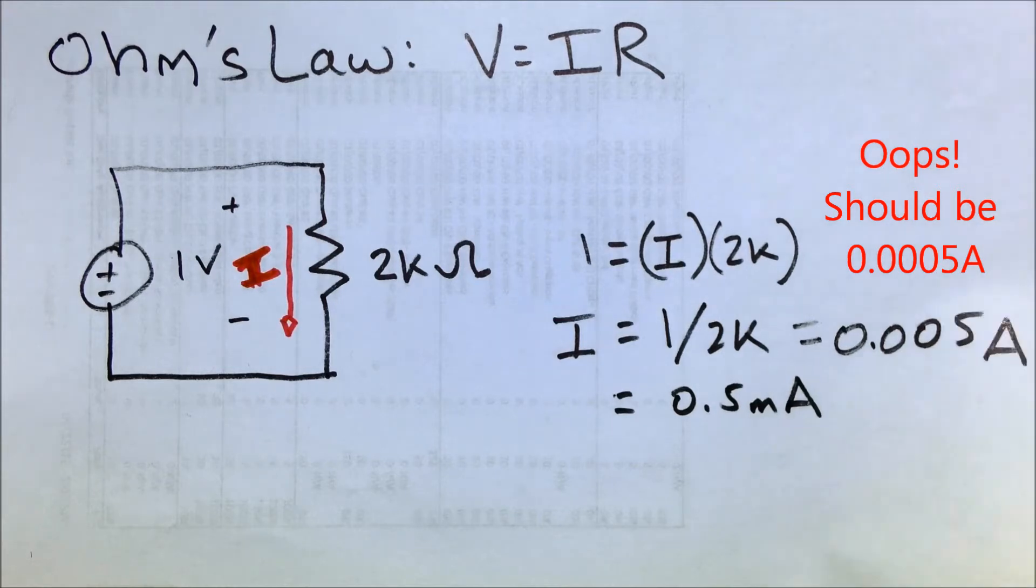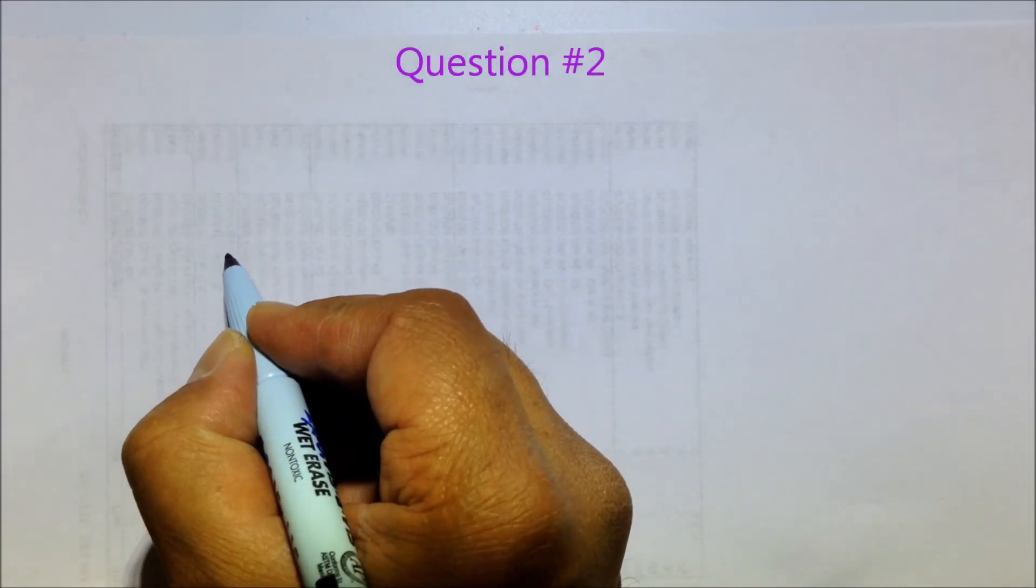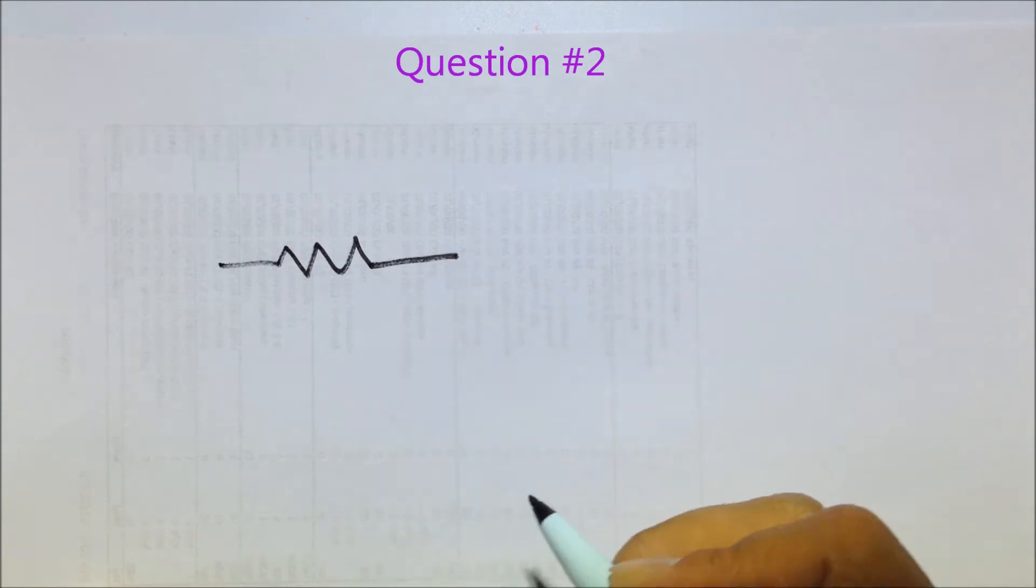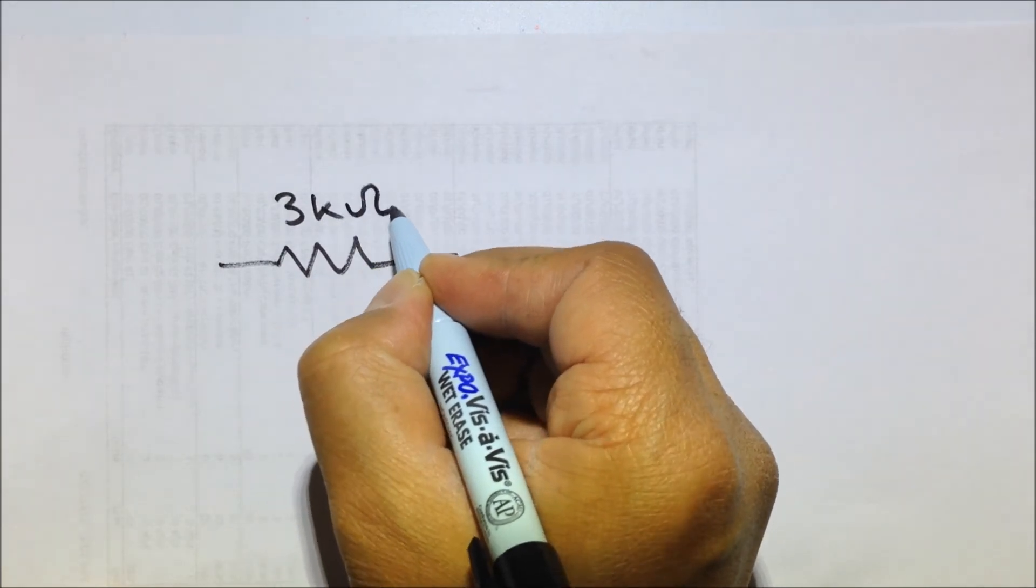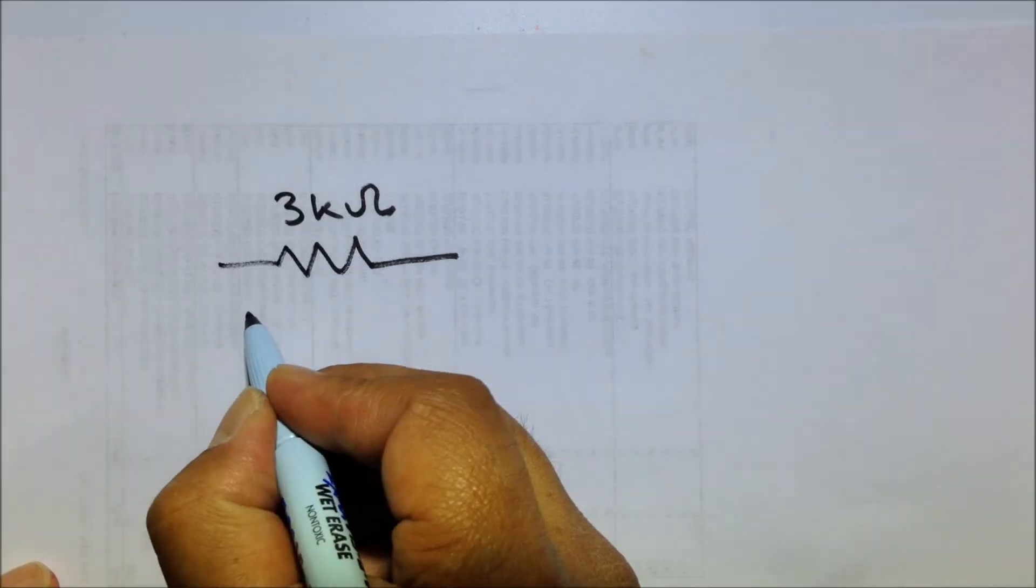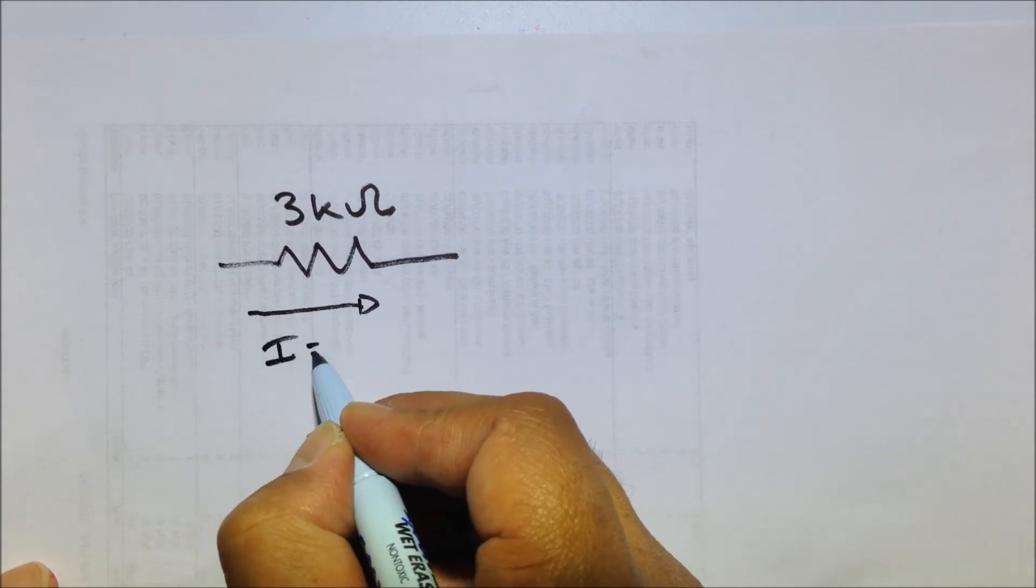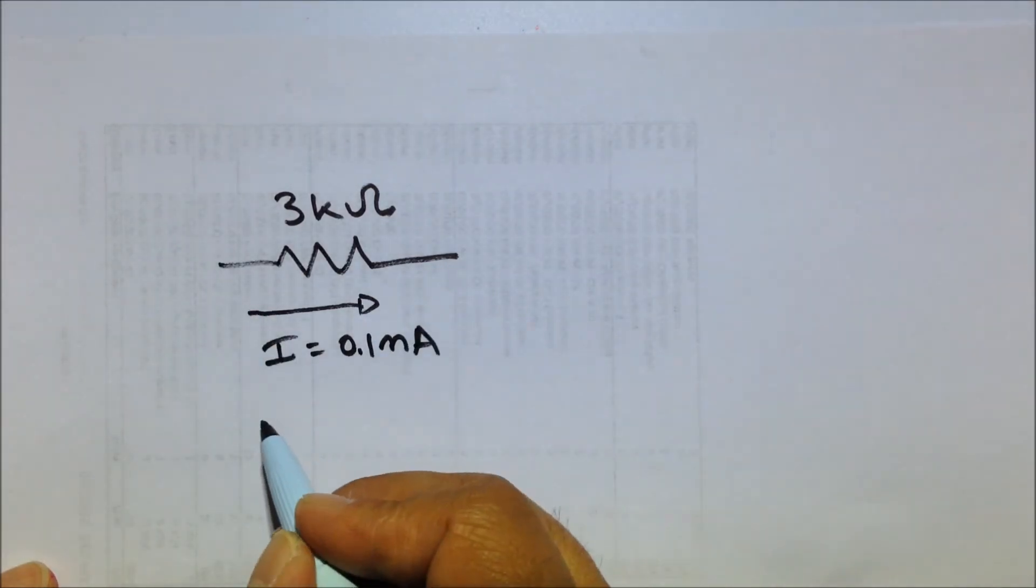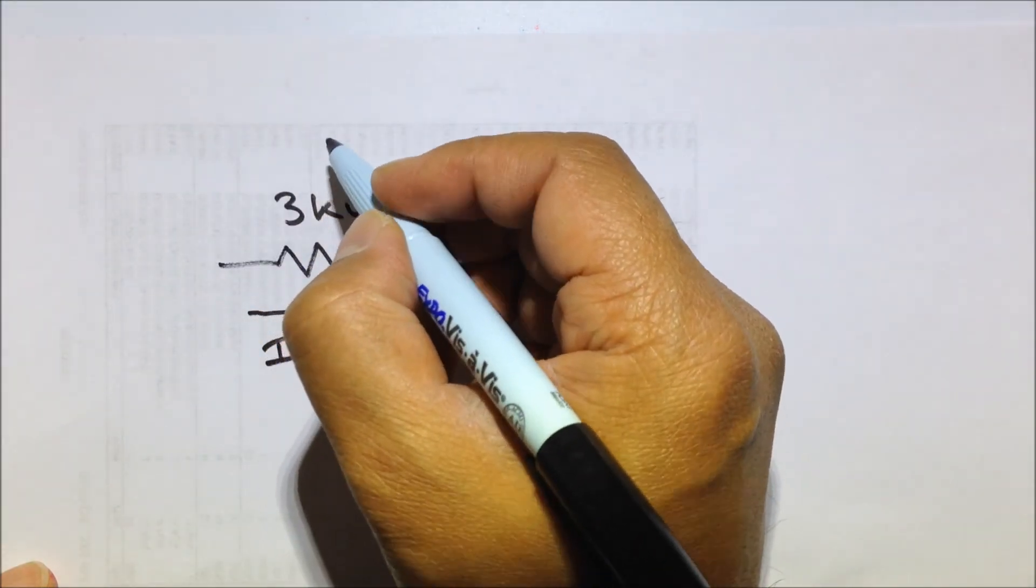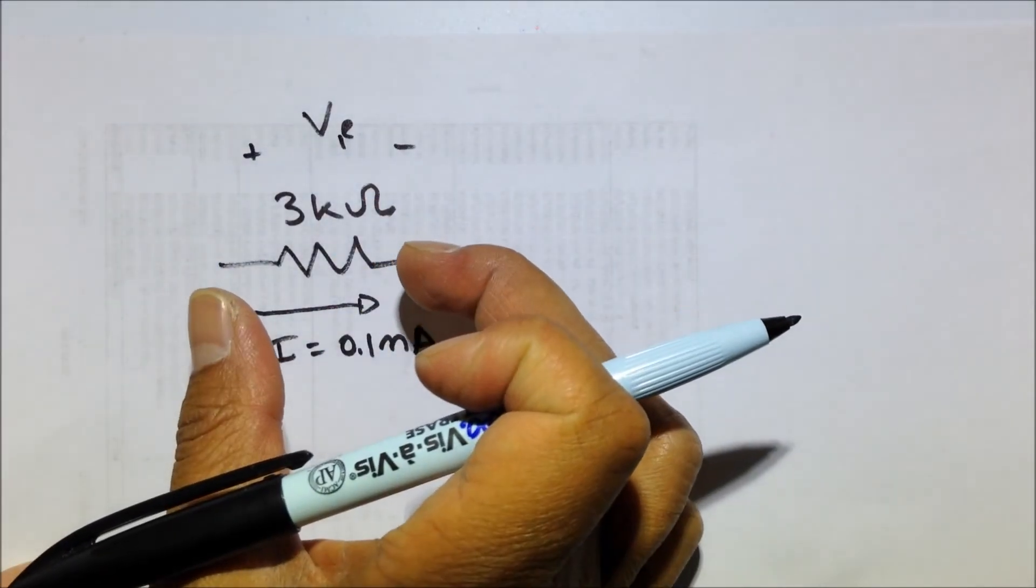Now, in addition to that sort of circuit, what happens if we don't know the voltage? So let's say we have a resistor again, I'm going to draw it just a little bit differently. Let's say we have a resistor, and we know that the resistance is 3 kilo-ohm, and we've done some measurements, or we're told that the current running through the resistor is 0.1 milliamps. That's the current running through here, but what we don't know is we don't know the voltage drop across here. We don't know what V of the resistor is.